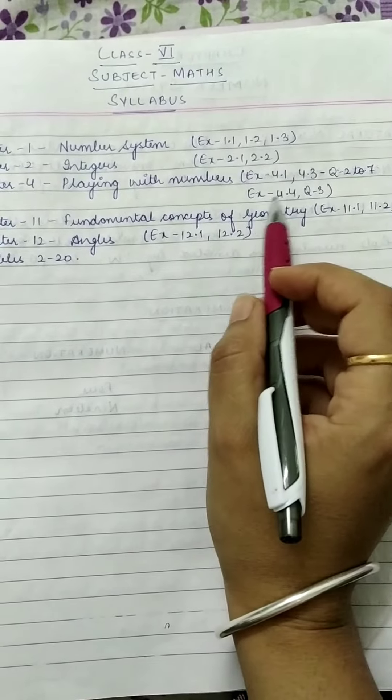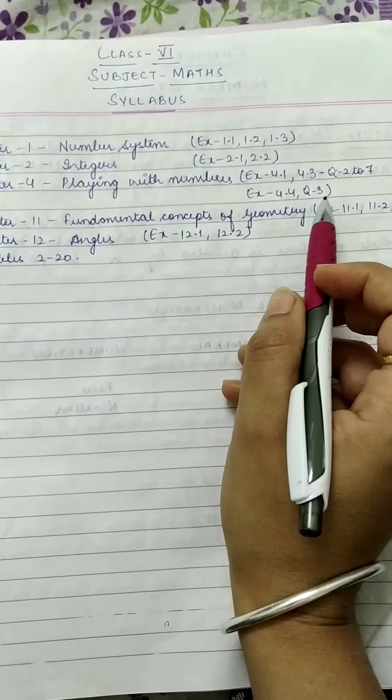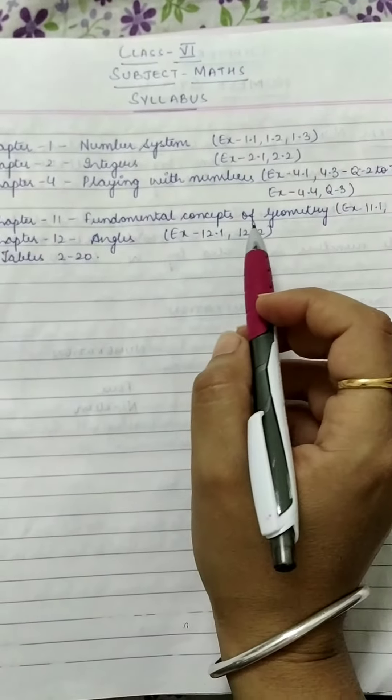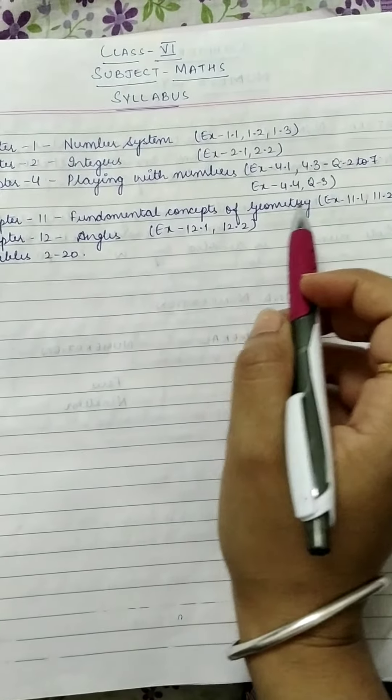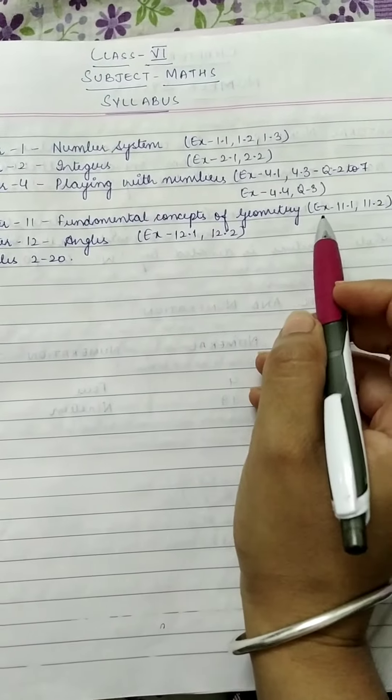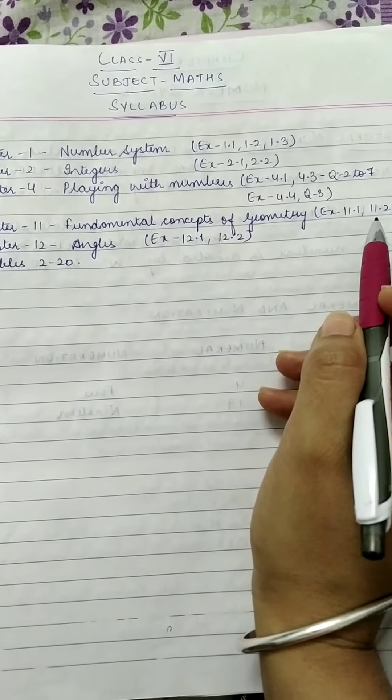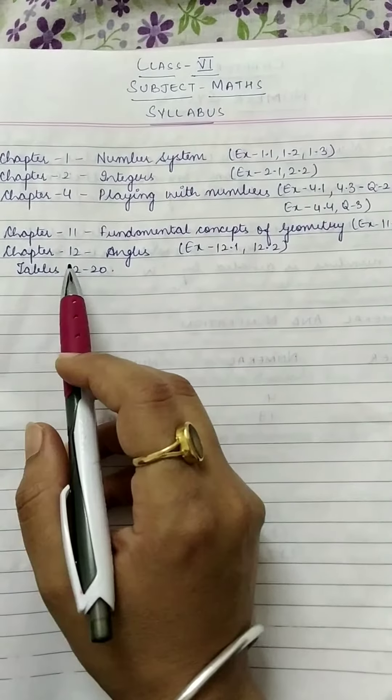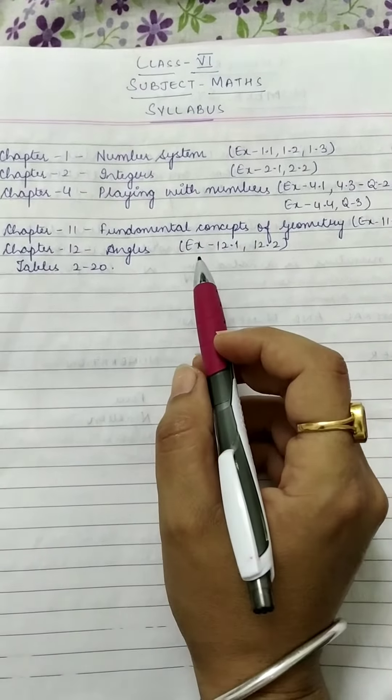Next is Chapter 11: Fundamental Concepts of Geometry. In this also, two exercises are there - Exercise 11.1 and 11.2. Last chapter is Chapter 12: Angles. In this, two exercises are there.